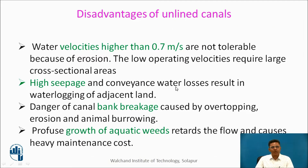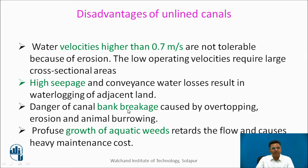Disadvantages of Unlined Canals: In unlined canals, velocities higher than 0.7 meters per second are not tolerable because higher velocities lead to erosion. Hence, unlined canals need a bigger cross section compared to lined canals. Unlined canals lead to high seepage — about 30 to 40 percent of water is lost. Furthermore, there is a danger of bank breakage if there is overtopping. Unlined canals also lead to growth of aquatic weeds which reduce the canal cross section, reduce discharge capacity, and need a lot of maintenance.